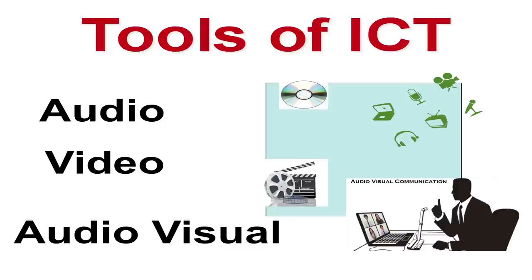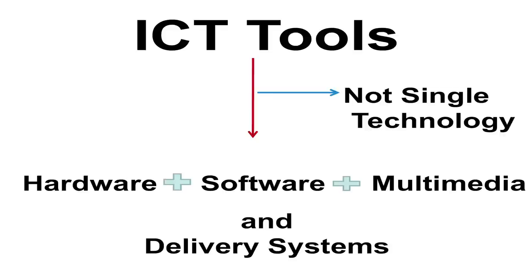And lastly, audio-visual, which is a combination of audio and video. So these are basically three tools of ICT: audio, video, and audio-visual. Next, what is the combination of these tools? It is not one single technology — it is a combination of hardware, for example a computer, plus software such as Microsoft Word, PowerPoint, or Excel, plus multimedia and the delivery system. That constitutes all the ICT tools.